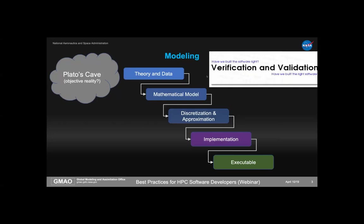Where does this fit into the development process? We start with objective reality — scientists form theory, take observations to create data, posit a mathematical model, then discretize it and introduce approximations. We translate that discretization into an actual software implementation, then compile it into an executable. Software verification, for our purposes, is this step: going from the discretized mathematical model to a concrete Fortran implementation. Whenever you're submitting a reproducer to a Fortran vendor, you're essentially doing verification on the compiler itself.